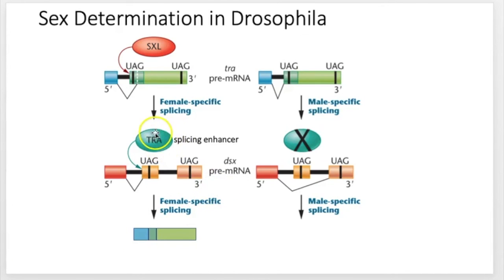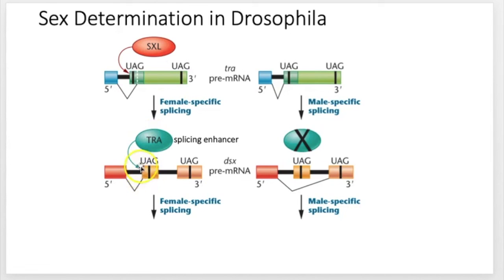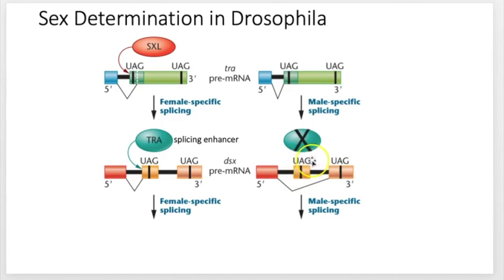So what does TRA do? TRA is a splicing enhancer. What TRA does in the female is it goes to the splice site on this exon and tells the cell we need to cut this intron out and keep this exon. Whereas when you don't have TRA, this splice site gets ignored. The cell just cuts at the flanking sites, getting rid of the middle exon altogether in males.